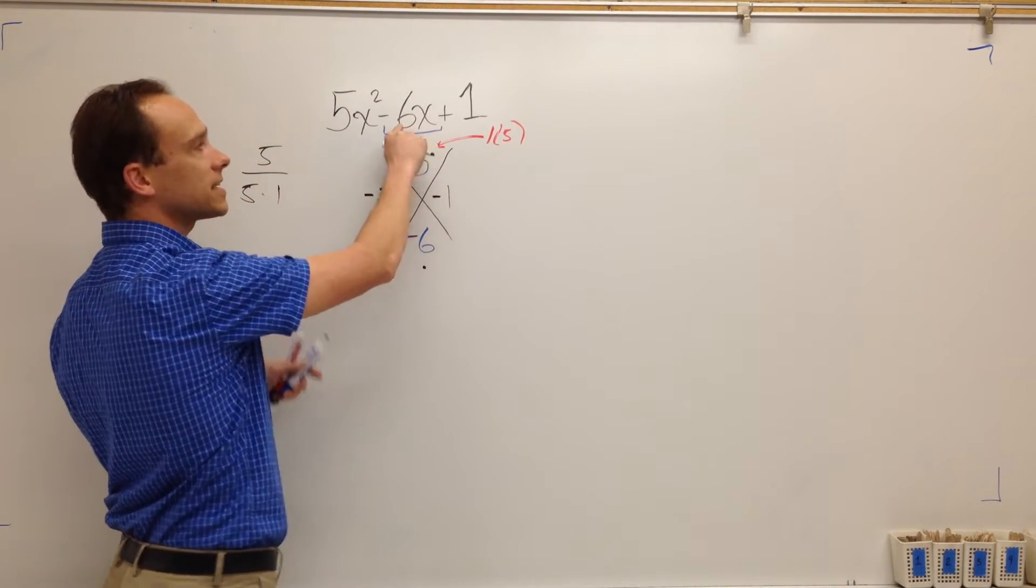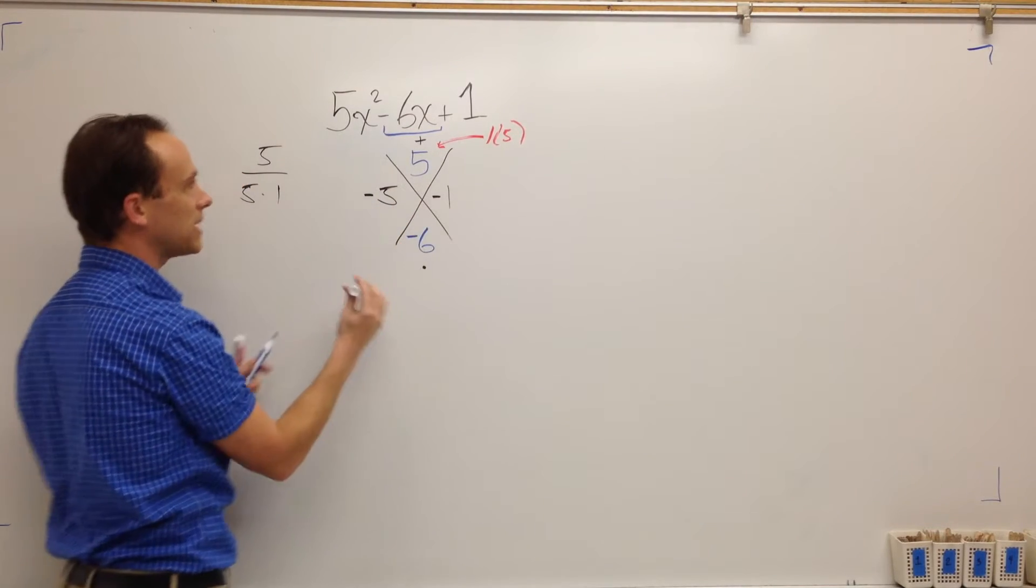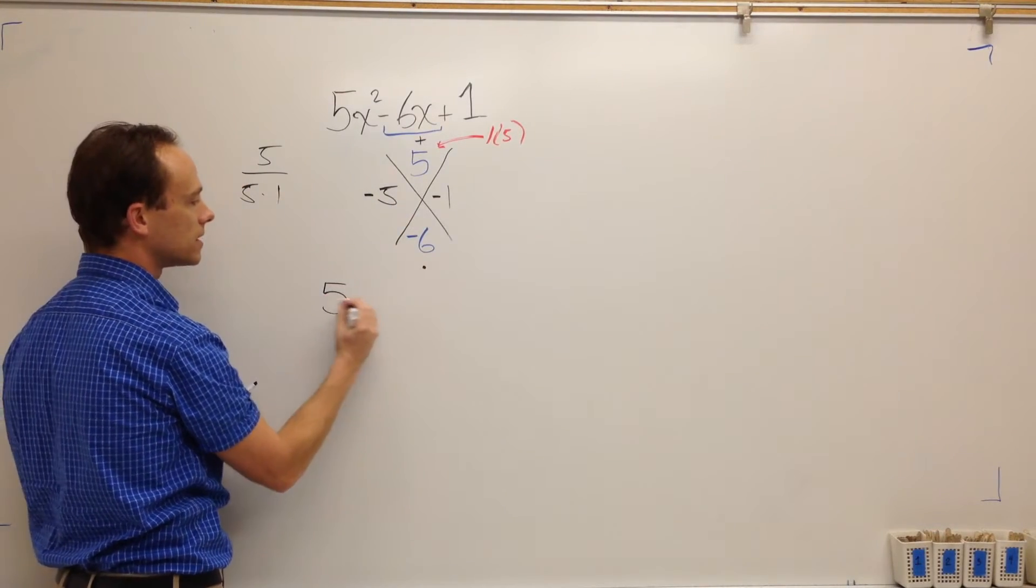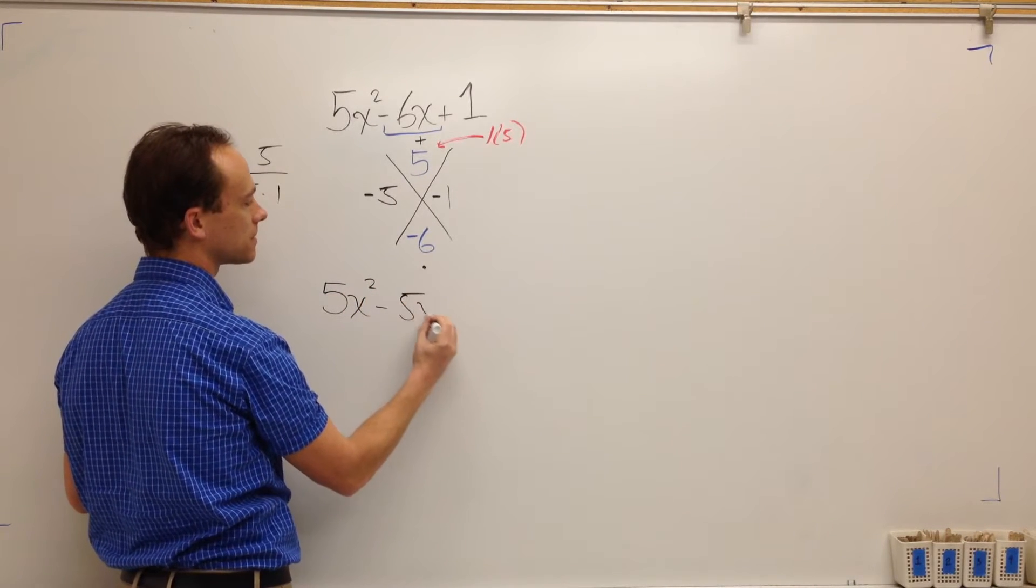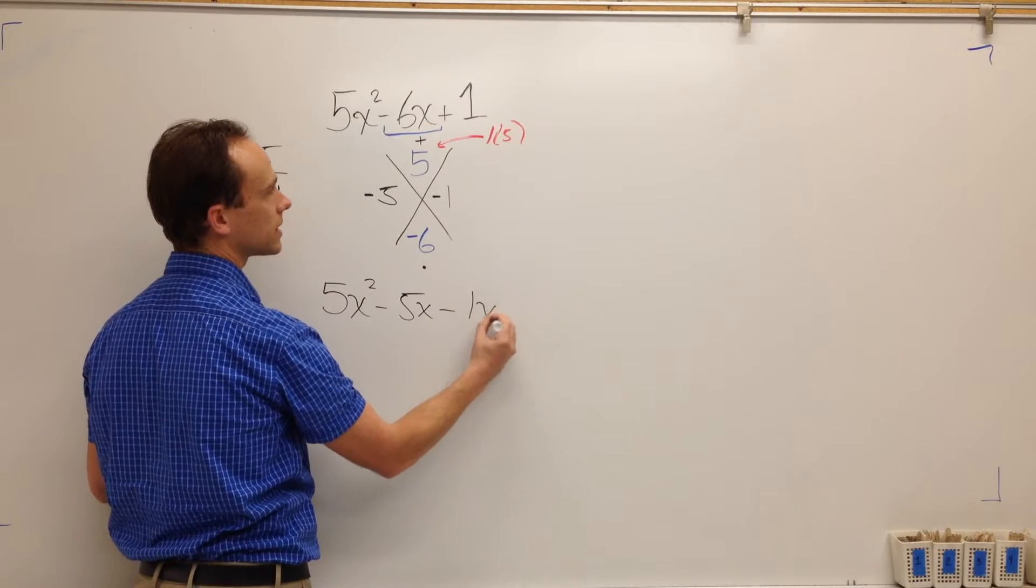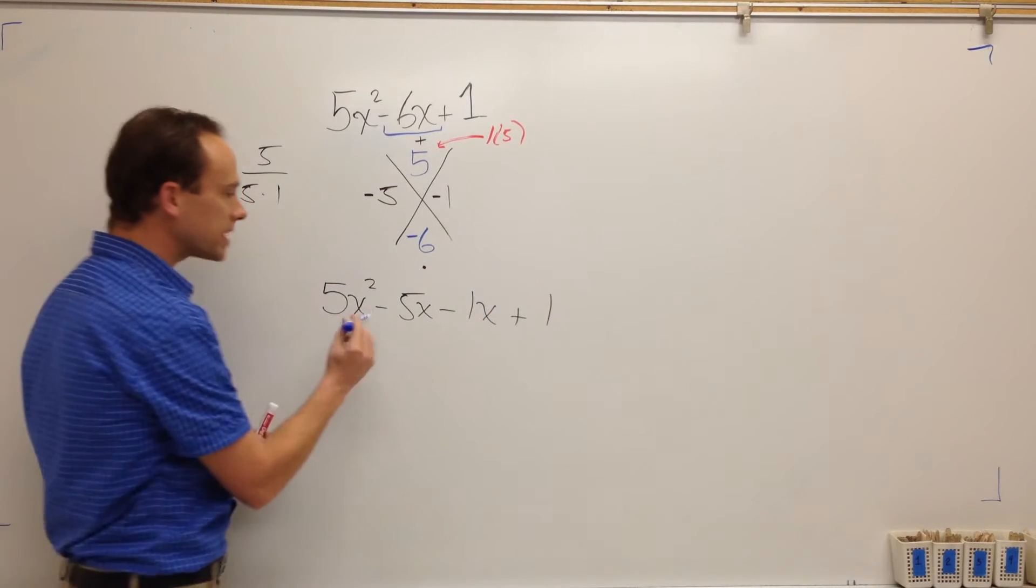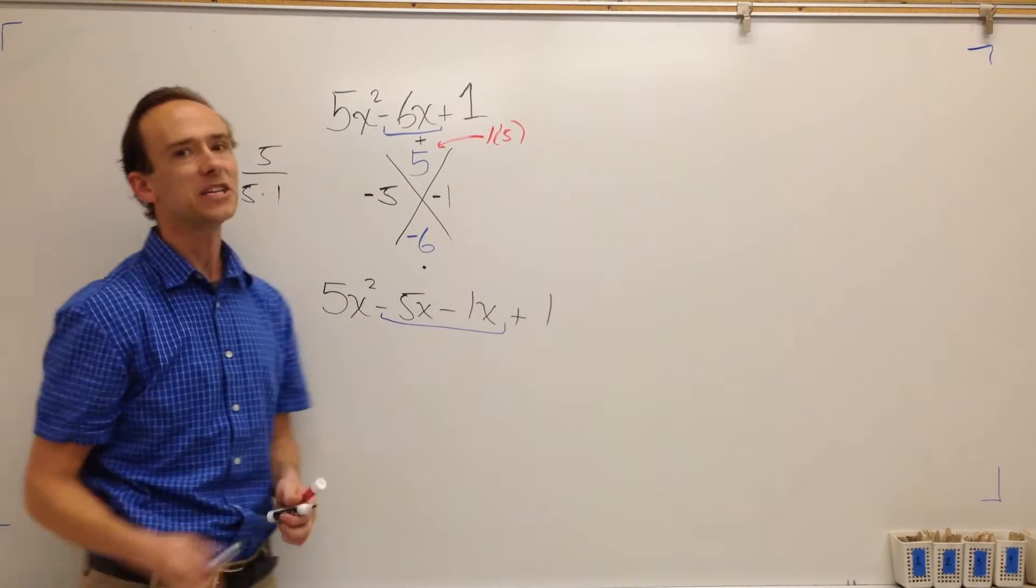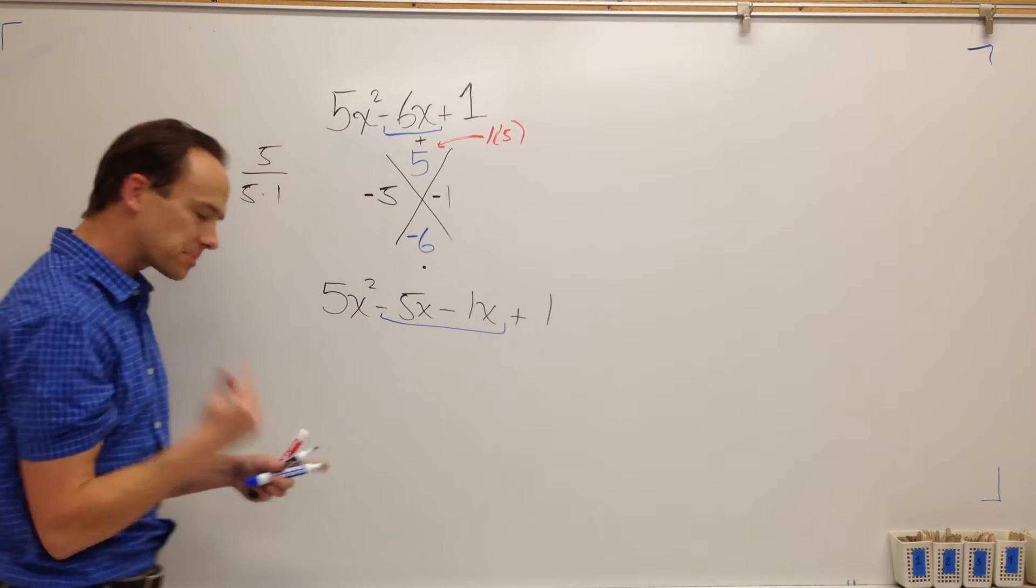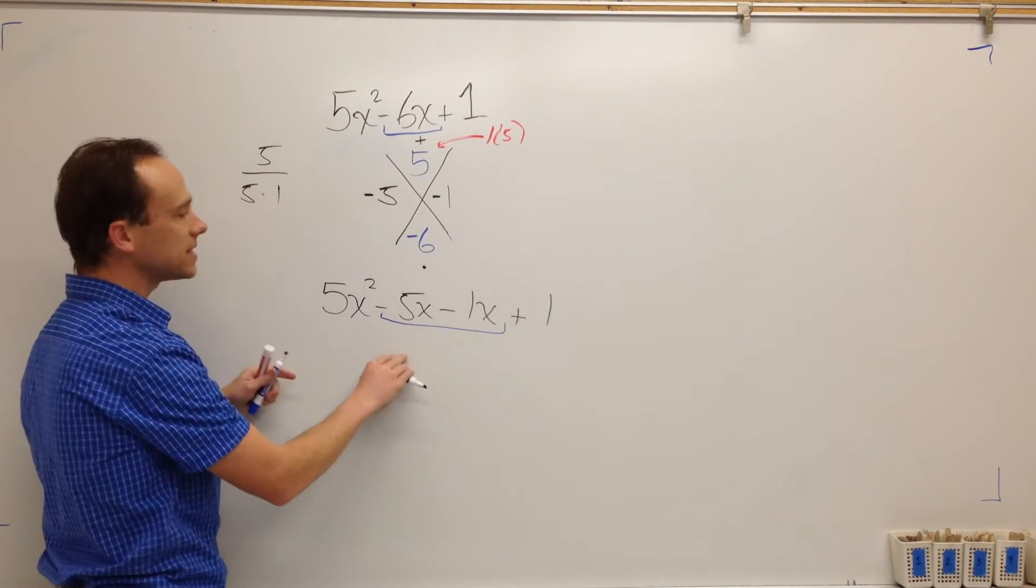Now we got this negative six. We're split in the middle. So negative six is going to become negative five minus one. Negative six is going to become negative five minus one. Let's get it. Minus one X plus one. We split the middle. There used to be a negative six. Now there's a negative five minus one. Middle time has split. Let's factor this.